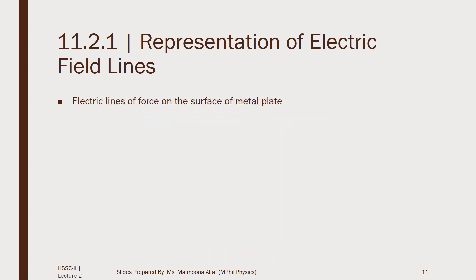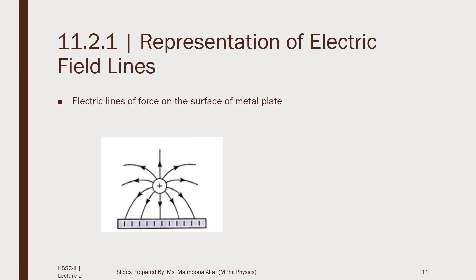Now the last case: electric lines of force on the metal surface. Suppose a positive charge Q is placed near a metal plate — the positive charge will attract the negative charges in the metal plate, resulting in the motion of these charges until some of them reach that surface. Therefore, these field lines will start from the positive charge and will end on the negative charges of the metal plate. Furthermore, these lines are always perpendicular to the metal surface, and electric lines of force cannot pass through the conductor. Therefore, the electric field is zero inside a conductor.